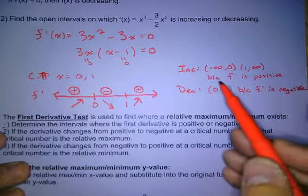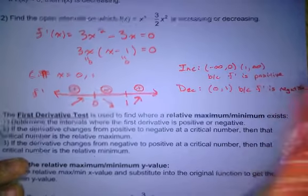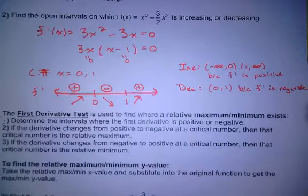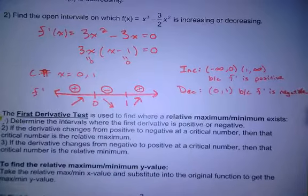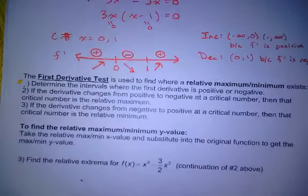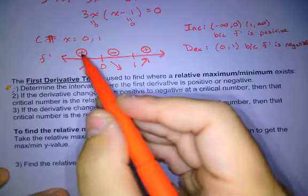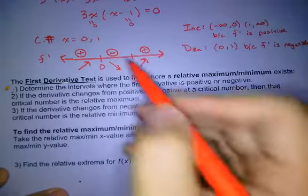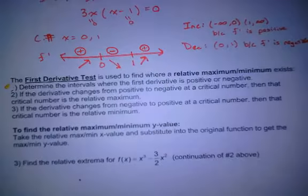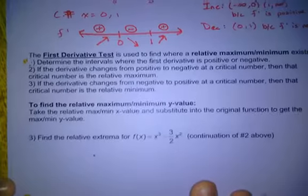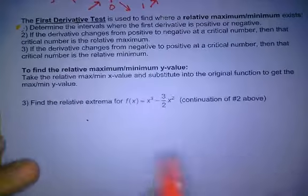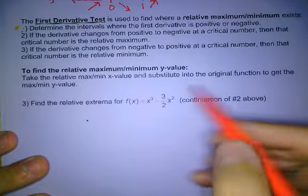First derivative test. I literally just talked about that in less words than this thing does. It's a max if we go from increasing to decreasing, and it's a min if we go from decreasing to increasing. That's it. I don't know why I have to write paragraphs and paragraphs. So find the relative extrema of this one, which is number two, which is right above. So we're going to kind of continue this problem. We're exactly going to continue this problem. So I've already done all the work.